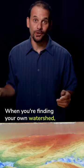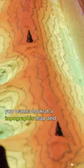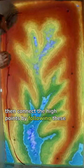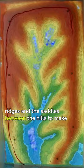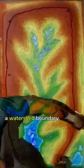When you're finding your own watershed, you want to look at a topographic map and then connect the high points by following these ridges and the saddles between the hills to make a watershed boundary.